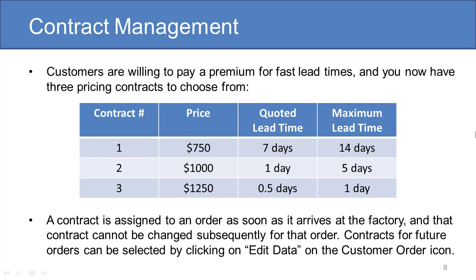Contract 2: price $1,000, quoted lead time 1 day, maximum lead time 5 days. Contract 3: price equals $1,250, quoted lead time equals half a day, maximum lead time is 1 day. A contract is assigned to an order as soon as it arrives at the factory, and that contract cannot be changed subsequently for that order. Contracts for future orders can be selected by clicking on Edit Data on the Customer Order icon.